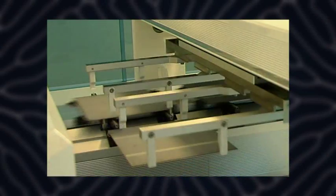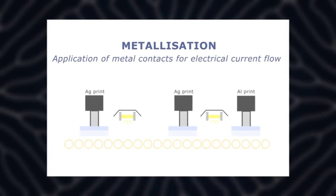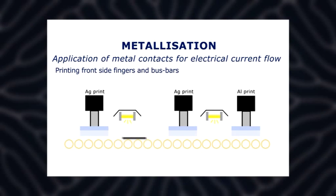Then, the rear side is printed with aluminium. The aluminium acts as a conductor and is necessary both for the internal function of the solar cell and the internal reflection of sunlight.